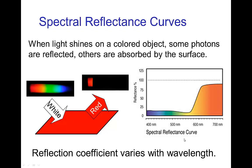This is characterized by the spectral reflectance curve. For a red object, it would have a very low reflectance percentage in most of the spectrum except for the end of the spectrum on the red side. In other words, the reflection coefficient varies with the wavelength of the photons.